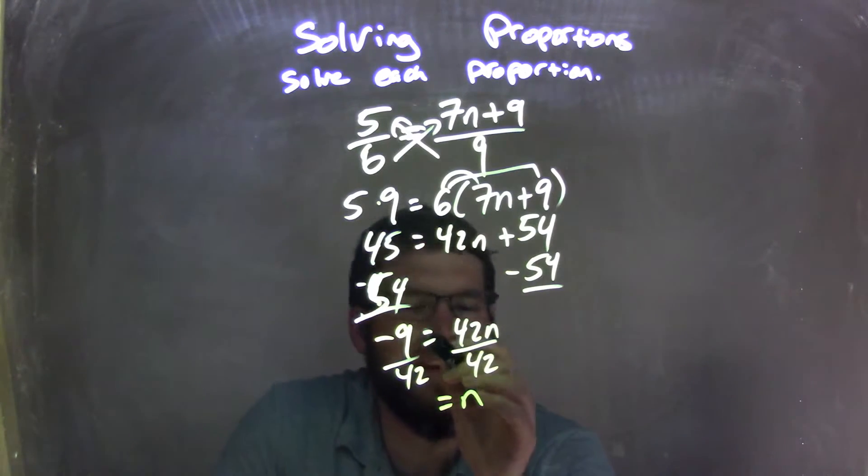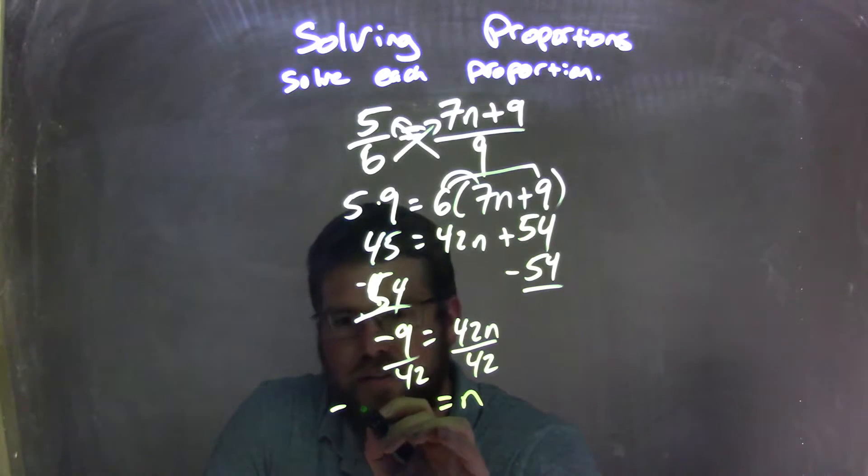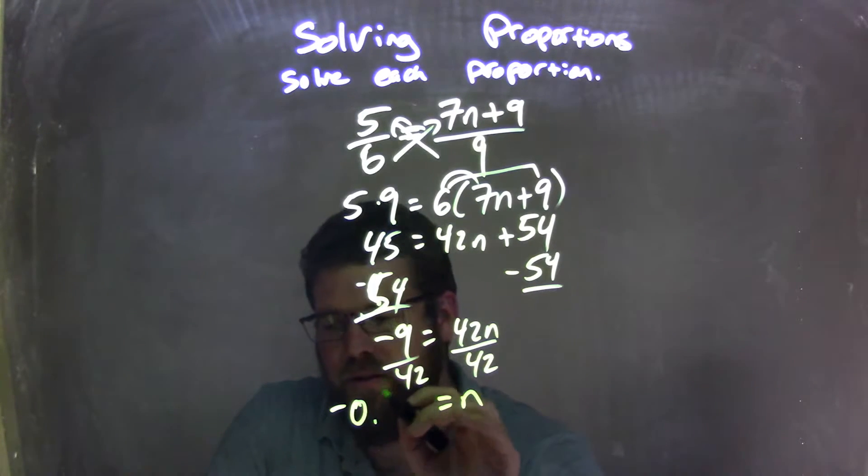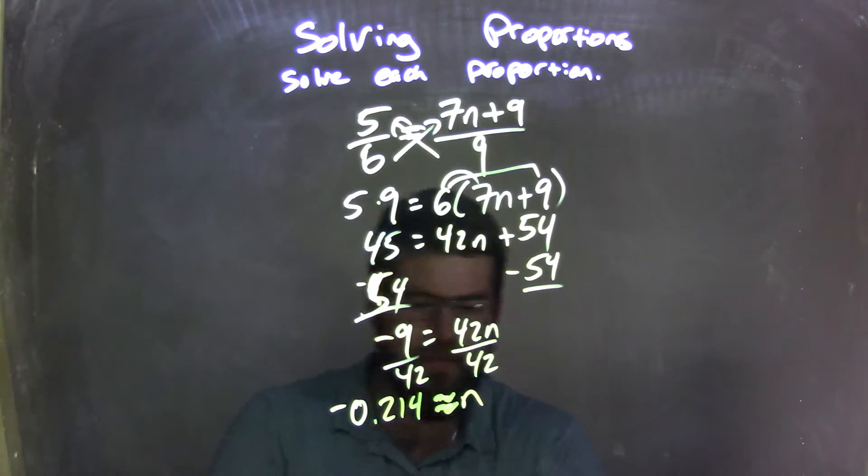Okay, negative 9 divided by 42 is a negative divided by positive, which is a negative, so I have negative 0.214, and that's approximately. So I'm going to change that equal sign to approximately, because I was rounding here.